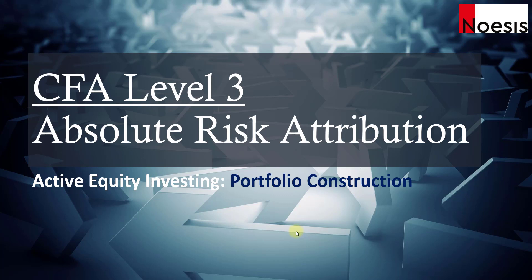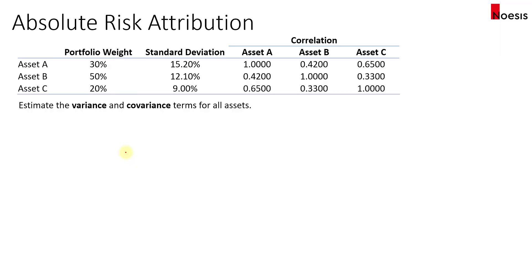In this video, we'll look at the absolute risk attribution, which is covered in active equity investing, portfolio construction. So let's start by looking at an example. Let's say we have a portfolio of three assets with different weightage. It adds up to 100%. Then you have the respective standard deviation and then the correlation between the assets.